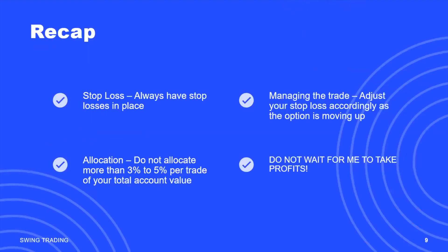So as a recap: number one, stop loss — always have your stop losses in place. Number two, managing the trade — adjust your stop loss accordingly as the option is moving up. Allocation — do not allocate more than 3% to 5% per trade of your total account value. And finally, do not wait for me to take profits.